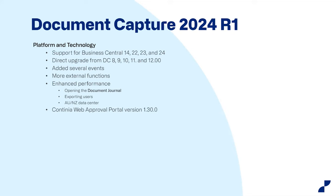Let's jump into the show and look at the long list of changes and new features. First of all, we support BC 14, 22, 23, and 24 as announced by Kim. You can also do a direct upgrade from DC 8 — DomoCapture 8 — all the way up from version 8 to 12 to the newest version. As always, we add several events and more extensive external functions — that's probably more for developers. We also enhance performance, including the DomoJournal and user export, plus a new AUNZ Australia/New Zealand Data Center for speeding up OCR in their region. The web portal for approving documents has also had a few things added.